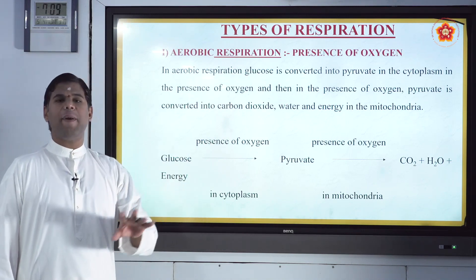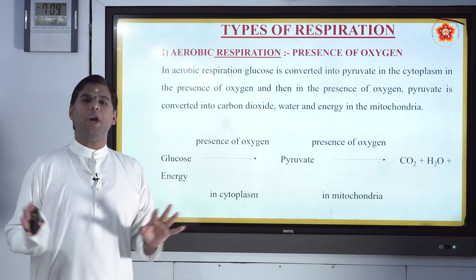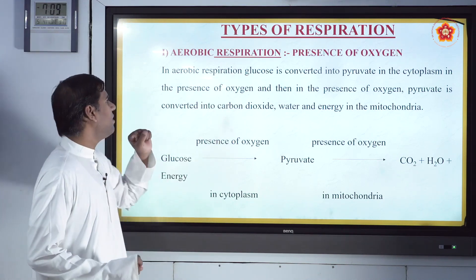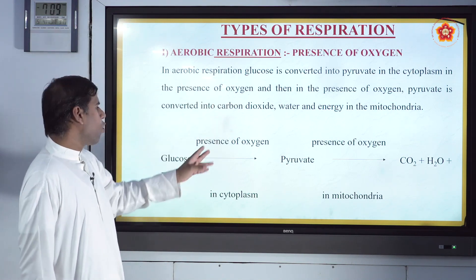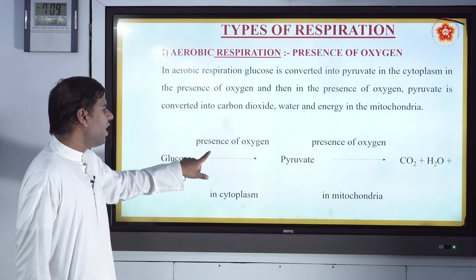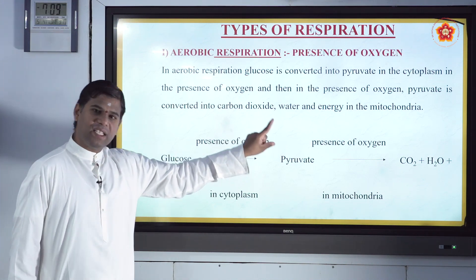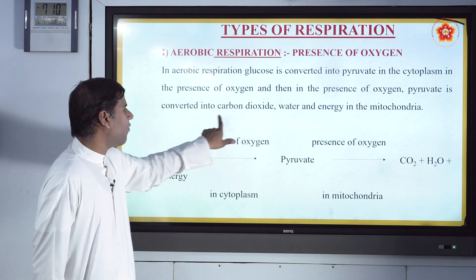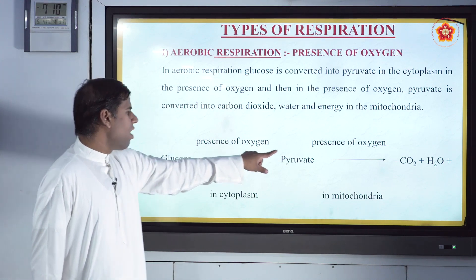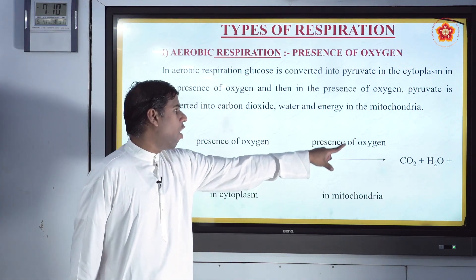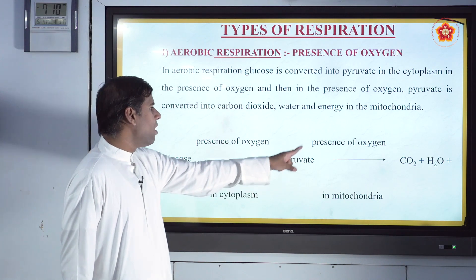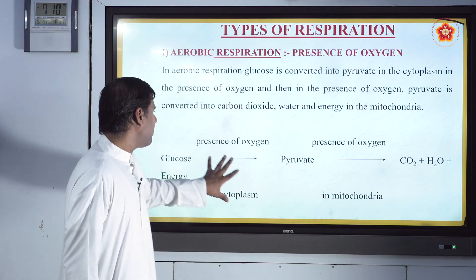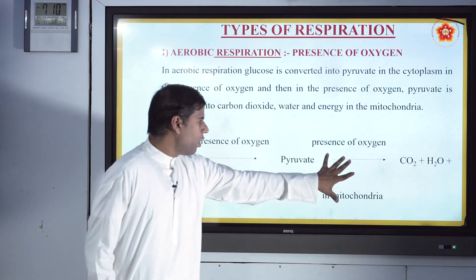In aerobic respiration, glucose is converted into pyruvate — this takes place in the cytoplasm in the presence of oxygen. Then, again in the presence of oxygen, the pyruvate is converted into carbon dioxide plus water, and that happens in the mitochondria.